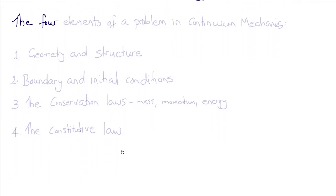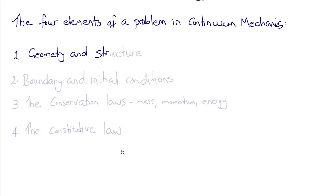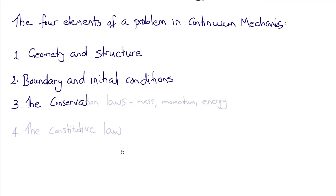Now that we know the governing equations of continuum mechanics — namely the conservation laws and the constitutive law — we can outline the four elements needed to solve a continuum mechanics problem. First, you need the geometry and information about the structure of the body of interest. Second, you need the boundary conditions and, if it's a time-varying problem, initial conditions. Third, we need the conservation laws — mass, momentum, and energy — which are universal for all material continua. And finally, we need the constitutive law, which is specific to the particular material being studied.